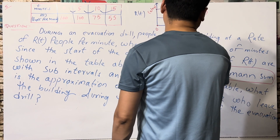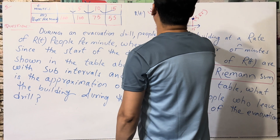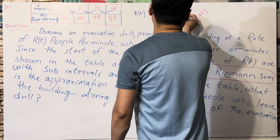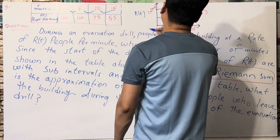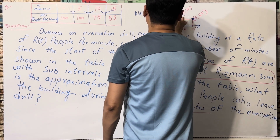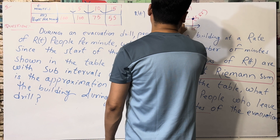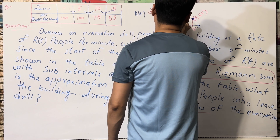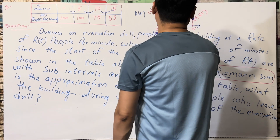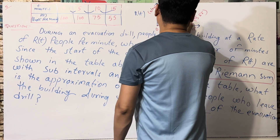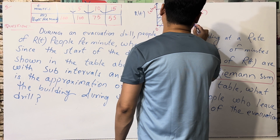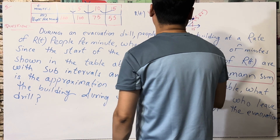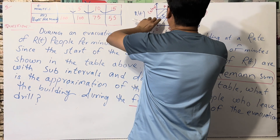For the right Riemann sum, the right corner points are what we use. The first right endpoint is at T equals five, the second is at T equals ten, and the third is at T equals fifteen. If this were a left Riemann sum, we would take the left points instead. But since we are using right Riemann sums, we take these three right-side points to find the area approximation - the number of people leaving the building.